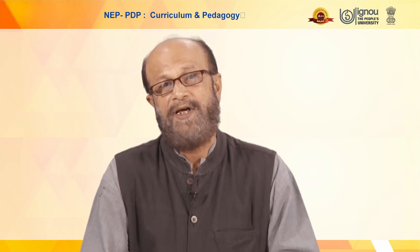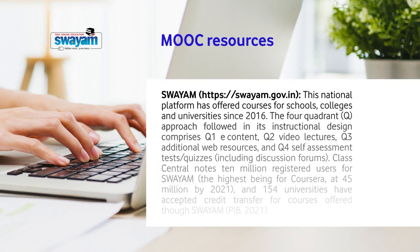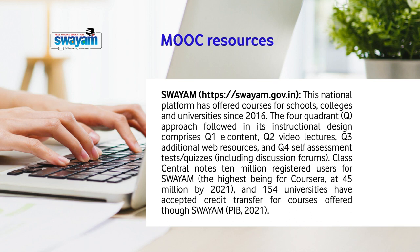There are many resources available. MOOCs are available elsewhere that one can take up, but they should be recognized by the statutory bodies of one's own institution. The best and largest MOOC platform is SWAYAM, with a four-quadrant approach. Class Central, an international nodal agency, lists almost 10 million students registered in SWAYAM, though the highest has been Coursera with 45 million in 2021. More than 154 universities have accepted credit transfer for courses offered through SWAYAM, and that number must have increased by 2022.